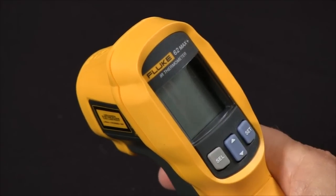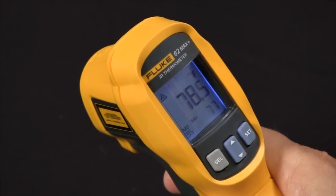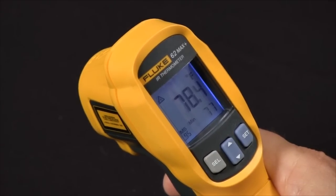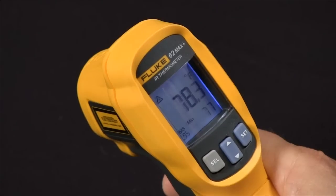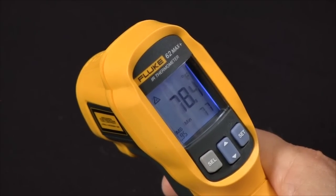The Fluke 62 Max and the 62 Max Plus are handheld IR thermometers. The 62 Max has a distance to spot ratio of 10 to 1 and the 62 Max Plus has a distance to spot ratio of 12 to 1.